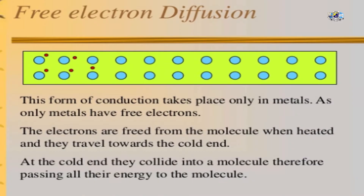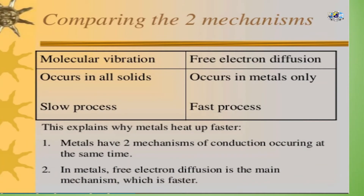Free electron diffusion is a form of conduction that takes place only in metals, as only metals have free electrons. The electrons are freed from the molecule when heated and they travel towards the cold end. At the cold end, they collide with molecules, passing all their energy to them. For metals, the mechanism is free electron diffusion, while for other solids it is molecular vibration. Note that in vibration, it does not involve the actual movement of molecules — thermal energy is transferred from one molecule to another until it reaches the cold end.